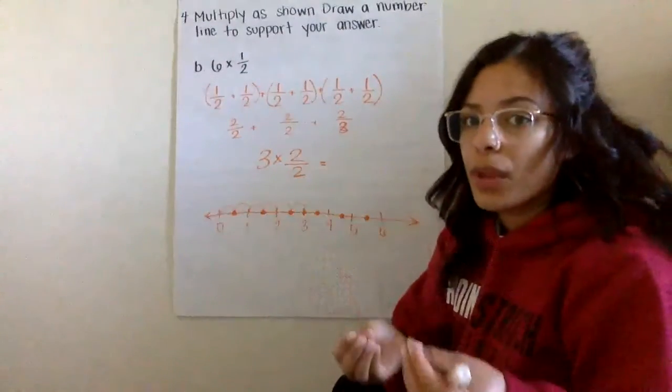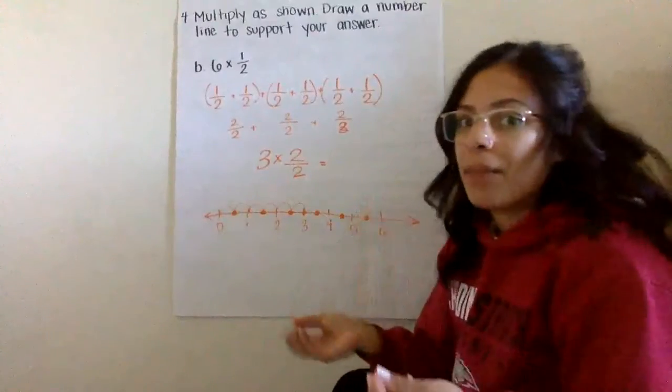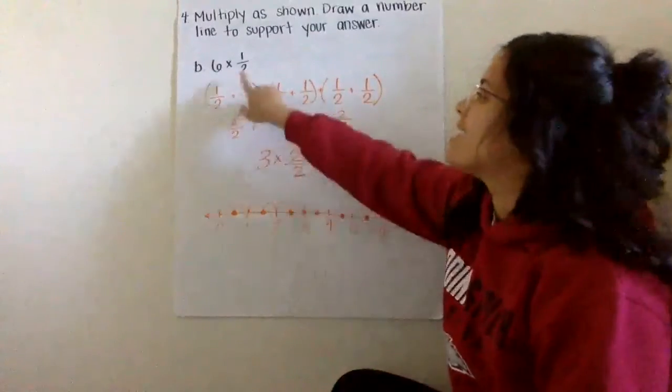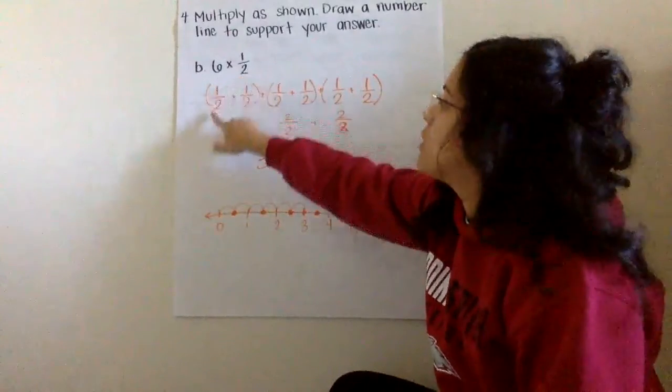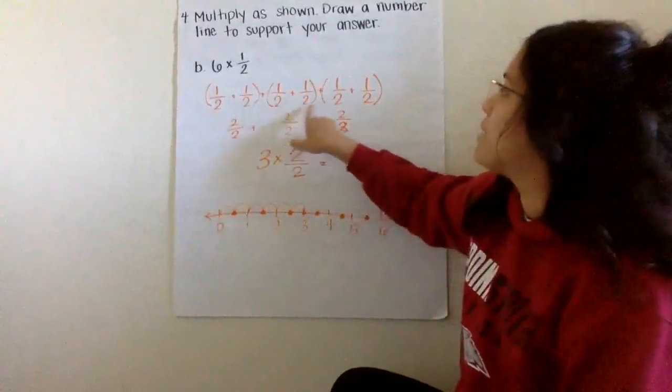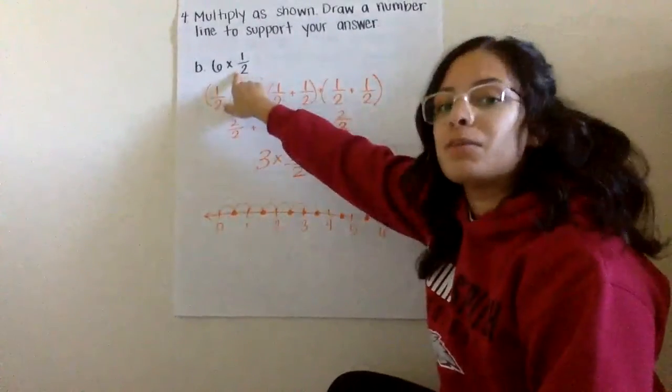Three times two is saying three groups of size two or three copies of size two. The same process works here. We have six copies of size one half. So when I go on and I add one half six times, that's basically the same as doing this.